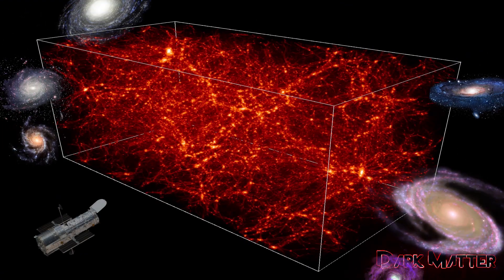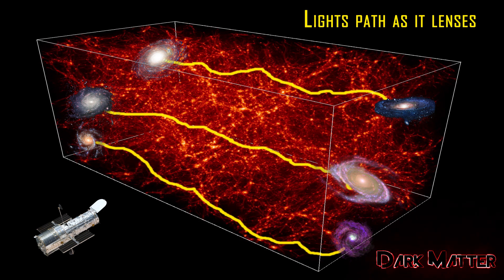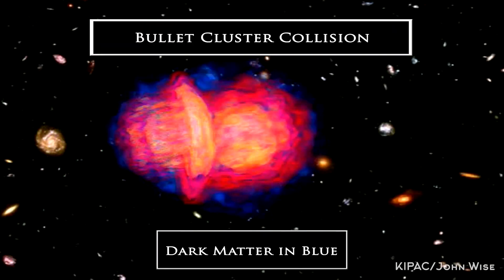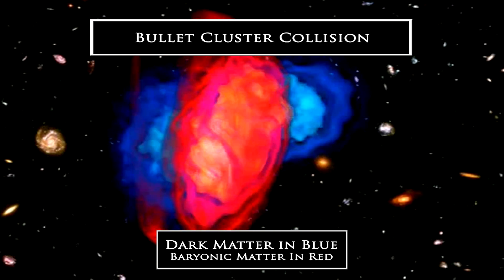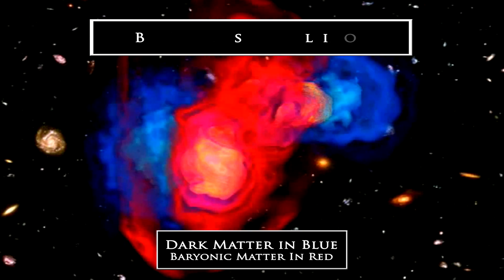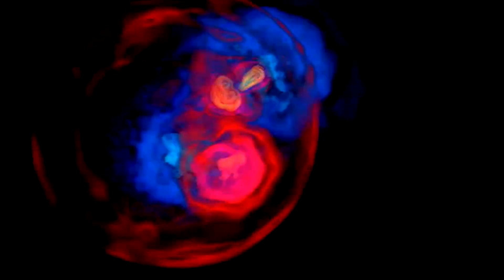Whilst scientists attempt to detect these theoretical particles in the lab, astronomers using the aforementioned detection methods have created a map of dark matter generated from real astronomical data. It shows how diffuse and spread out dark matter is compared to traditional mass like stars. In particular, the bullet cluster is compelling evidence of dark matter, as two clusters of galaxies collide. As the galaxies within the clusters pass each other, gases disperse in a way that can only be explained by something with gravity, yet invisible to us nonetheless.